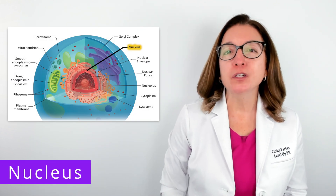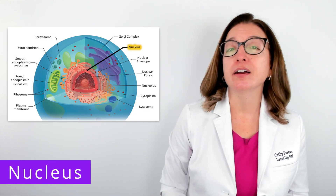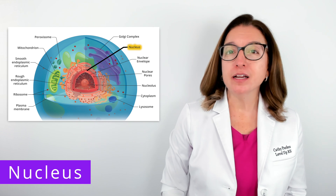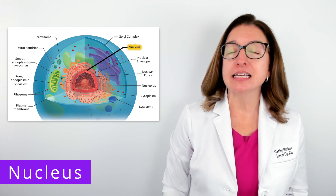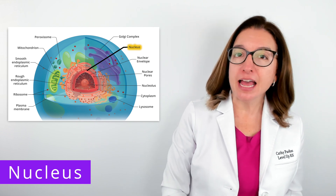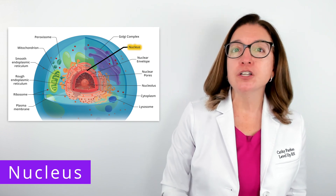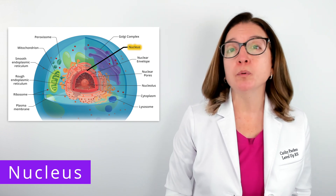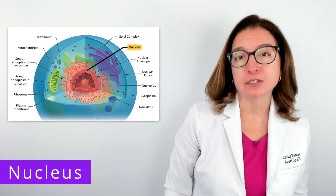First up, we have the nucleus of the eukaryotic cell. This is the organelle that contains the cell's DNA, which is organized into multiple linear chromosomes.